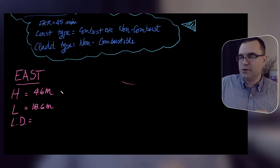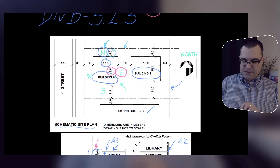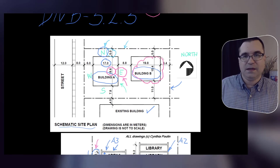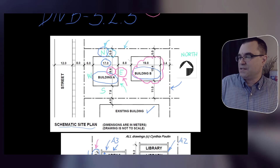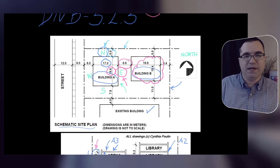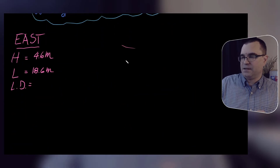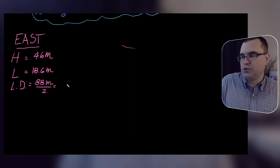What about the limiting distance? Well, in this case, if you go and read the definition for limiting distance, you find that since the east face is facing another building right here — building B — the limiting distance is halfway between those two buildings. That means we're going to take this distance, 8.8, and divide it by two for the limiting distance: 8.8 divided by 2 equals 4.4 meters.